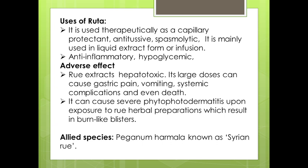The allied species is Peganum harmala, known as Syrian Rue, which is used as an allied species for this drug. This concludes the topic of Ruta.